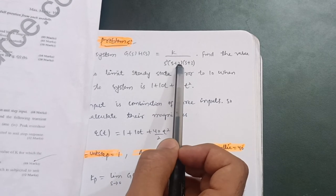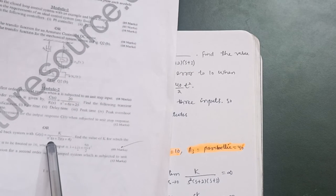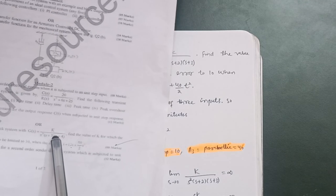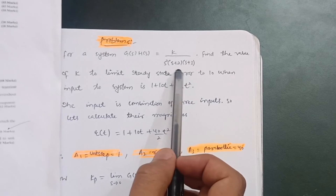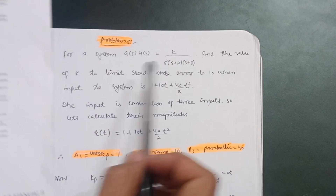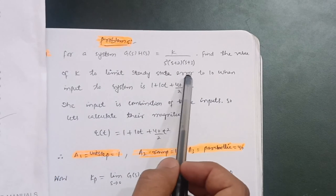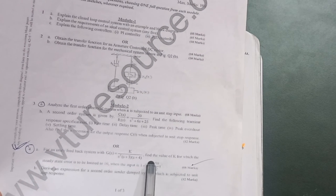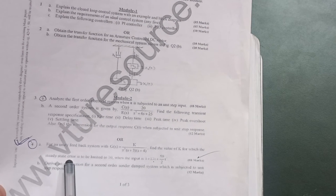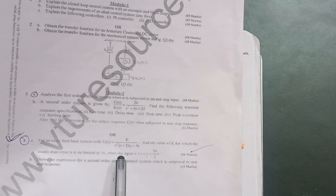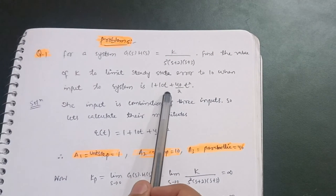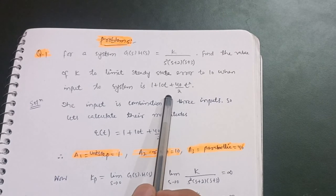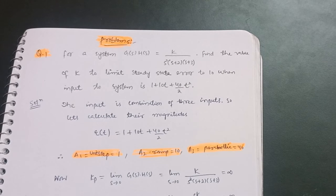I have varied the data slightly — instead of (s+3)(s+4), I have taken (s+2)(s+3), and the input is 1 + 10t + (40/2)t². The structure of the question is the same: find the value of k to limit the steady-state error to 10. The key thing to observe in this question is the inputs.